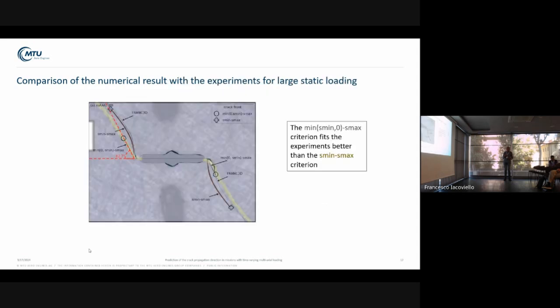If you look at the first test with the large static loading, the test result here is the yellow line. You see that the dS min dS max criterion, so the dominant cycle criterion in this case leads to crack propagation that starts with a large deviation here at the notch. So it doesn't match the test result well. However, if you change the criterion and say that if the mission is completely in the positive range, you stick to the dominant step criterion, then you get a very good match.